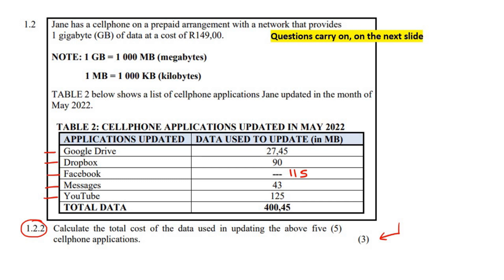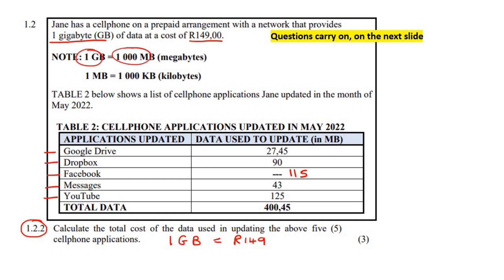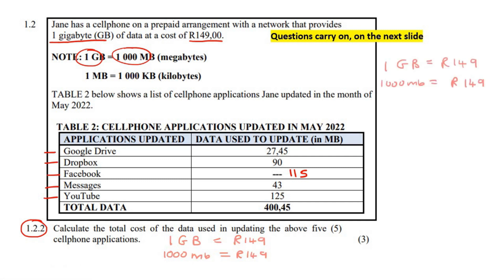So we know that the cost of data — they give us: for one gigabyte, that's 149 rand. So we can say one gigabyte is 149 rand. Now we slowly but surely have to change the one gigabyte all the way down to 400.45 megabytes. So let's first change the gigabyte to megabyte. We know that one gigabyte is 1,000 megabytes — so 1,000 megabytes will also be 149 rand, because these two are the same.